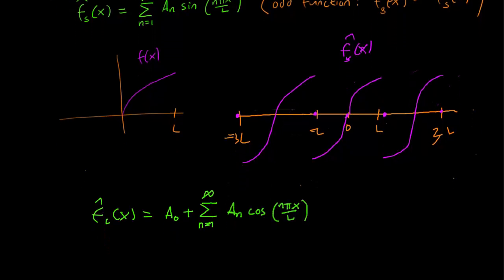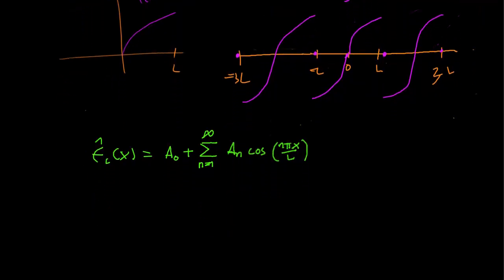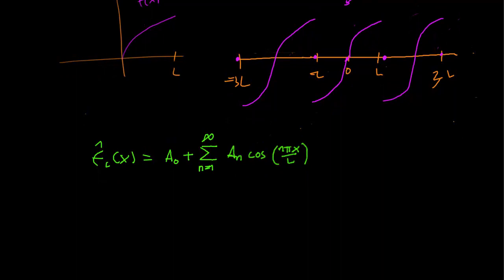The behavior is extremely similar for the cosine series. We draw a similar shape. Again, we mark off -L to L and we pay attention to where 0 is. We draw the same graph as we had in the past. And now notice that our f hat cosine of x is an even function.